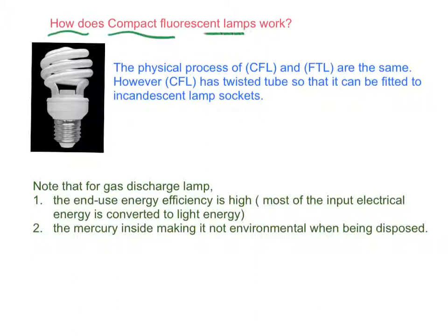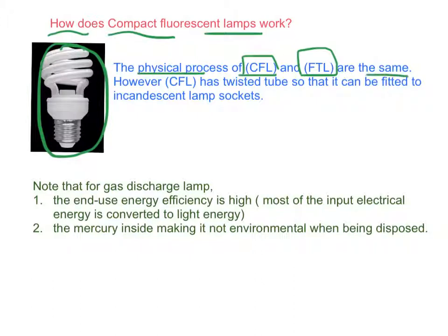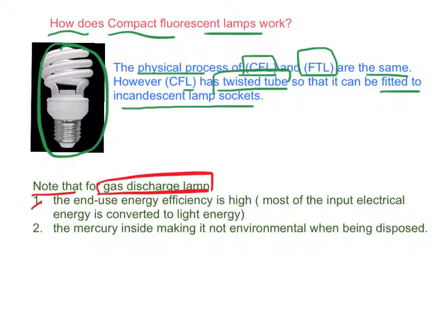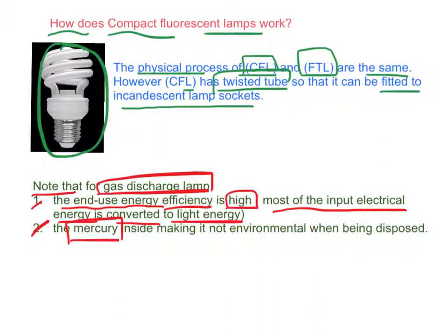How does a compact fluorescent lamp (CFL) work? The physical process of CFL and fluorescent tube lamps are exactly the same, except CFL has a twisted tube so that it can fit into incandescent lamp sockets. For gas discharge lamps, the end-use energy efficiency is very high because most of the input electrical energy is converted to light energy, and only a small amount of heat energy is released. However, the mercury inside the tube makes it not environmentally friendly when disposed, because mercury is poisonous.